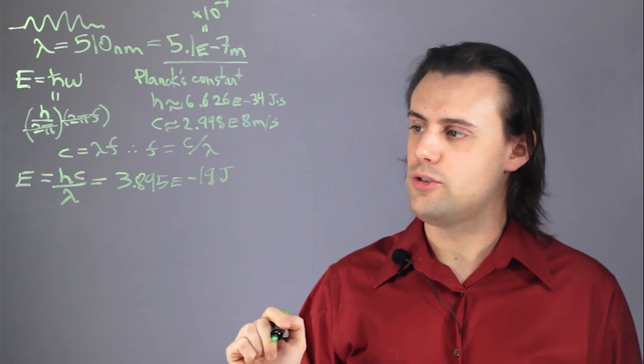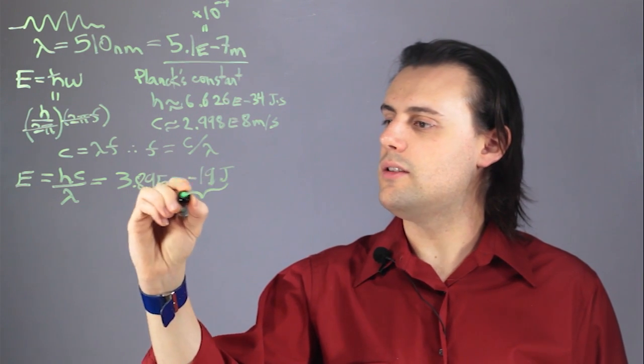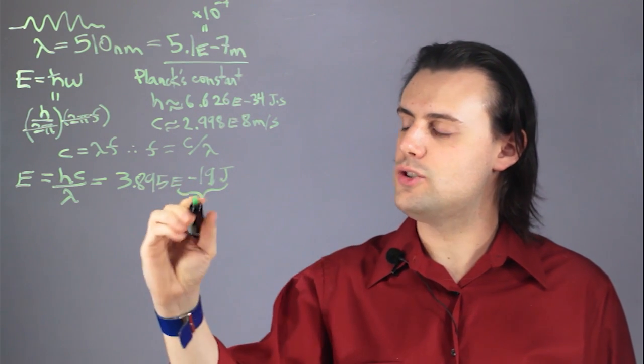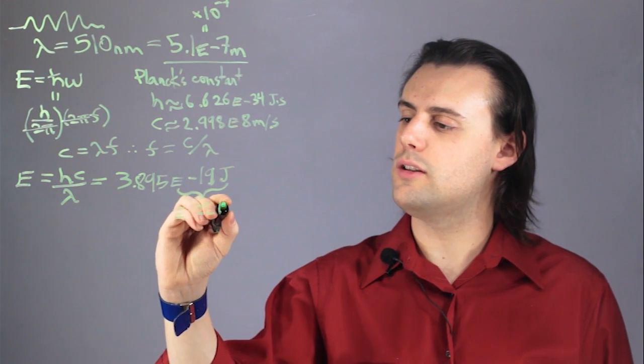And since we're interested in kilojoules, I just divide by 1,000. So this times 10 to the negative 19 joules becomes times 10 to the negative 22 kilojoules.